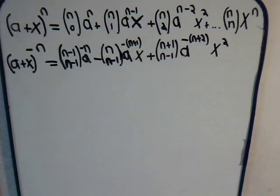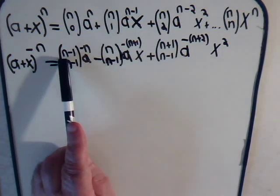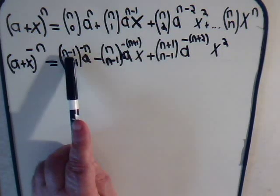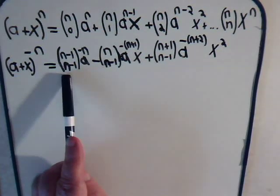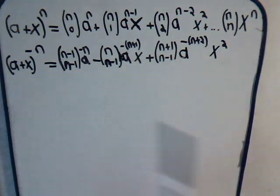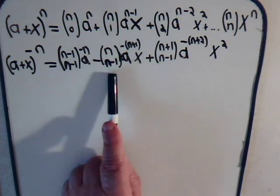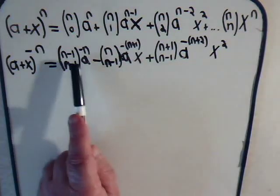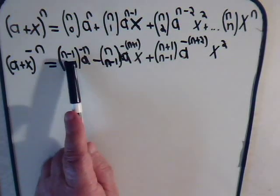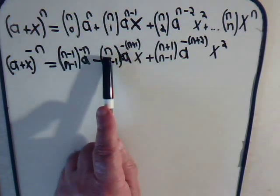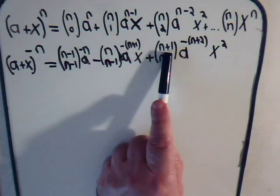Here the first coefficient is the binomial coefficient of n minus 1 over n minus 1, and now as we go throughout the series, the bottom part of the binomial coefficient stays the same, and the top part of the binomial coefficient continues to increase by 1.